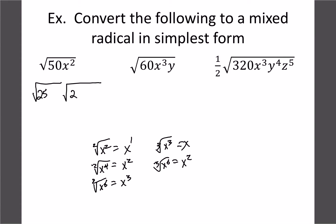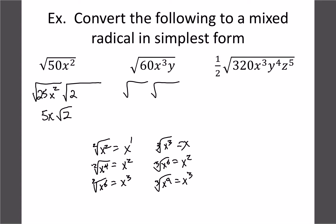For cube roots you're still dividing — 6÷3=2, 9÷3=3, and so on. Now if we can't pull out the full exponent, we take out the largest multiple we can. For √(50x²): the biggest perfect square from the list dividing 50 is 25, so 25×2. The x² works perfectly for a square root. Taking the square root gives us 5x√2 as the final answer.